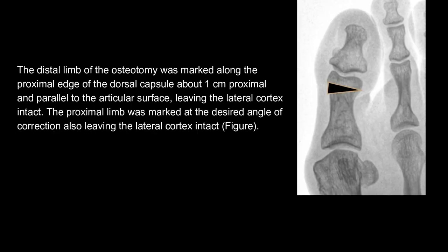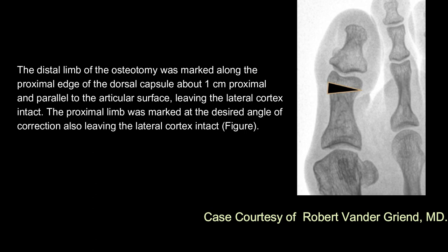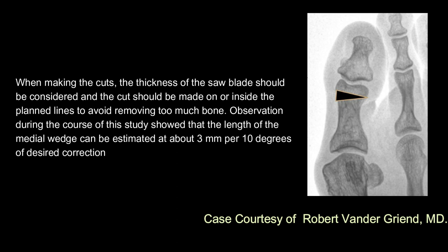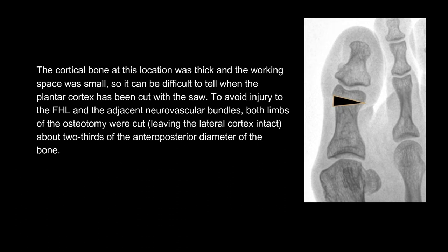The distal limb of the osteotomy was marked along the proximal edge of the dorsal capsule, about 1 cm proximal and parallel to the articular surface, leaving the lateral cortex intact. The proximal limb was marked at the desired angle of correction, also leaving the lateral cortex intact. When making the cuts, the thickness of the saw blade should be considered and the cut should be made on or inside the planned lines to avoid removing too much bone. The length of the medial wedge can be estimated at about 3 mm per 10 degrees of desired correction. The cortical bone at this location was thick and the working space was small, so it can be difficult to tell when the plantar cortex has been cut.